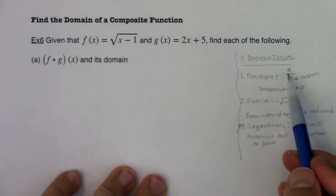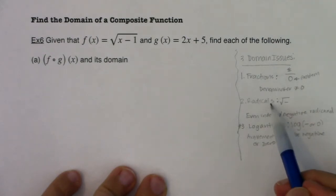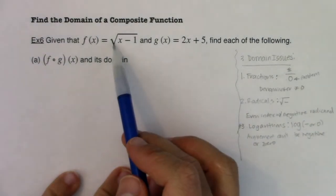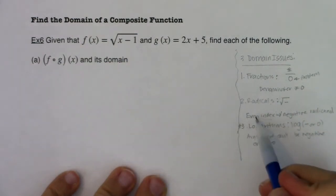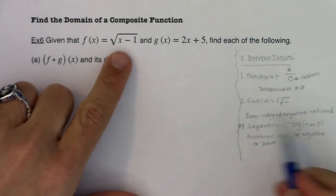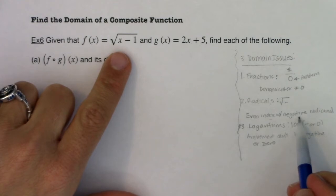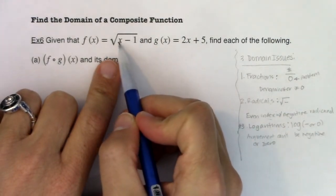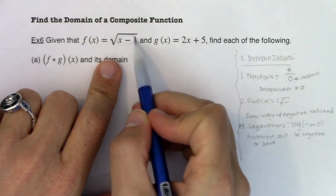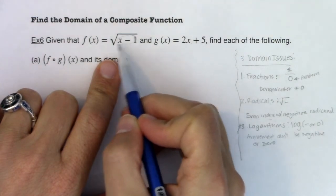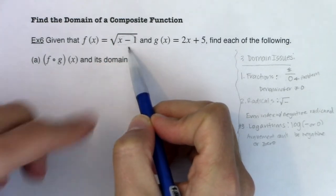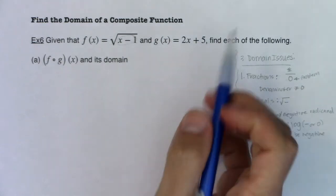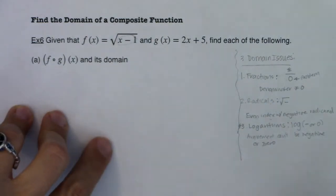We've already run into fractions and radicals, and we're about to run into radicals specifically. If you take a look here, I do have an even index — no number is written, so it's implied to be two. I have to make sure my radicand isn't negative. There are values of x that would make the stuff under the radical negative. Try plugging in zero: zero minus one is negative one, and I can't take the square root of negative one over the real numbers. So I would have a problem.